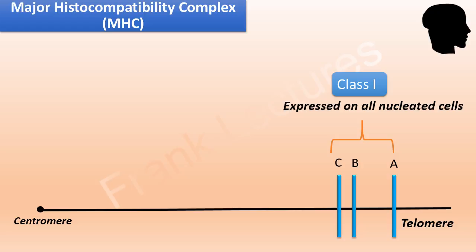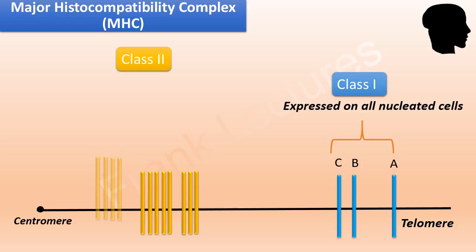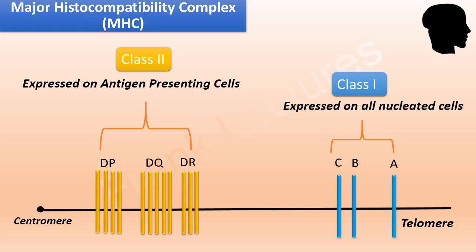Class 2 genes are situated in the D region, and there are several different loci known as DR, DQ, and DP. These glycoproteins appear only on cells that can process non-self materials and present antigen to other cells.